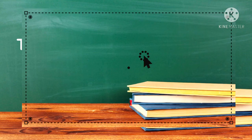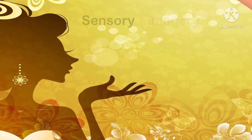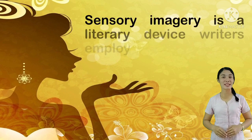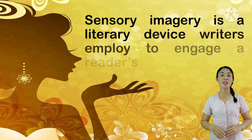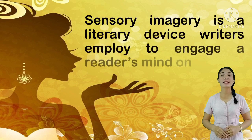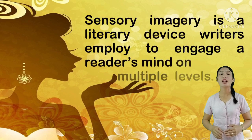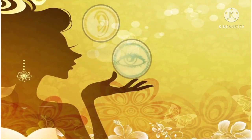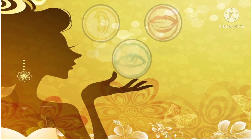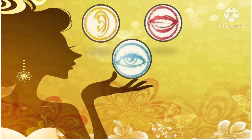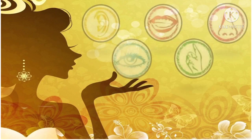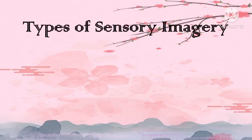Those examples use sensory imagery. Sensory imagery is defined as a literary device that writers employ to engage readers' minds. Sensory imagery explores the five human senses: sight, sound, taste, touch, and smell. Here are the different types of sensory imagery.